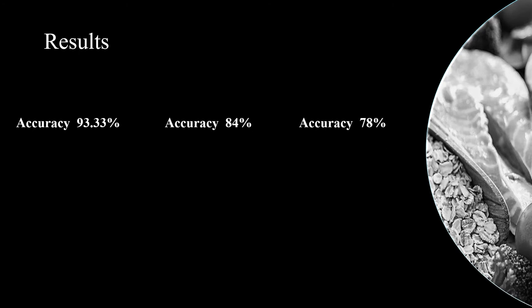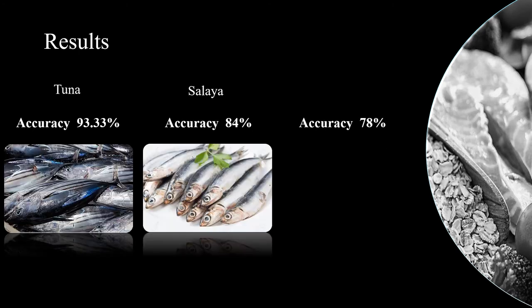Now I am going to discuss the results of this analysis. We got the maximum classification accuracy by a convolutional neural network which was built by us. Fish quality grade classification accuracies are 93%, 84% and 78% for tuna, salya and hurulna respectively.